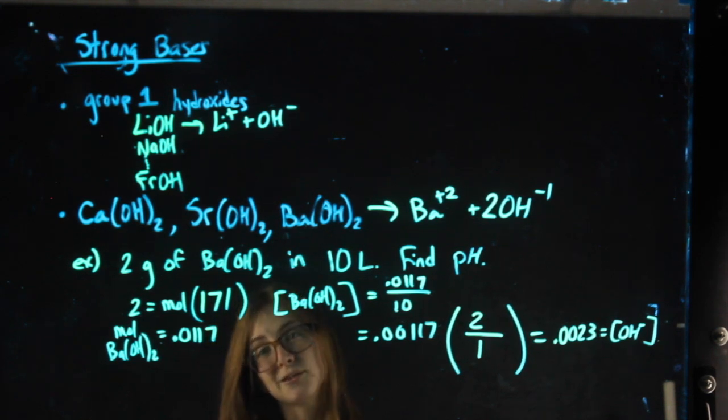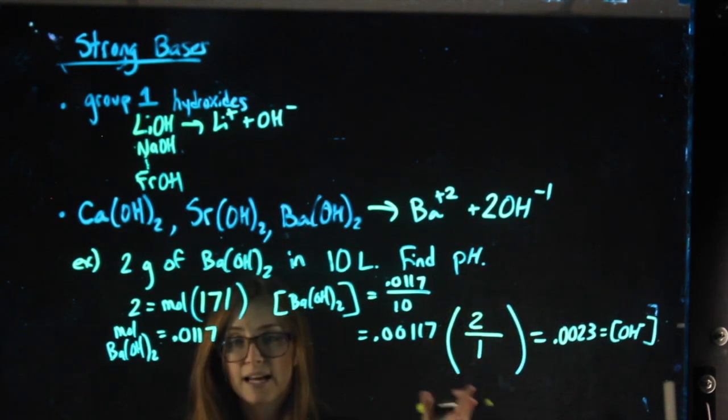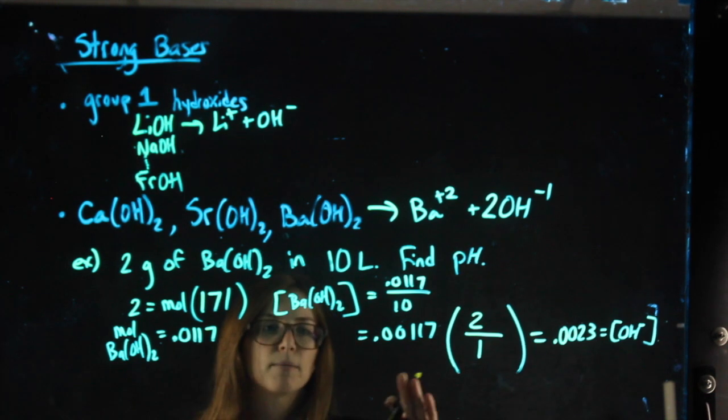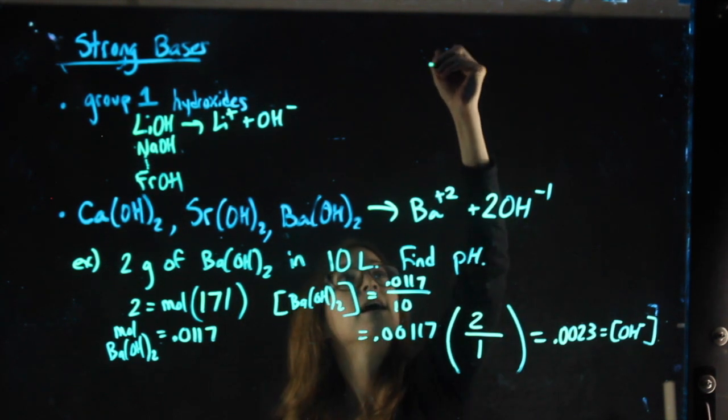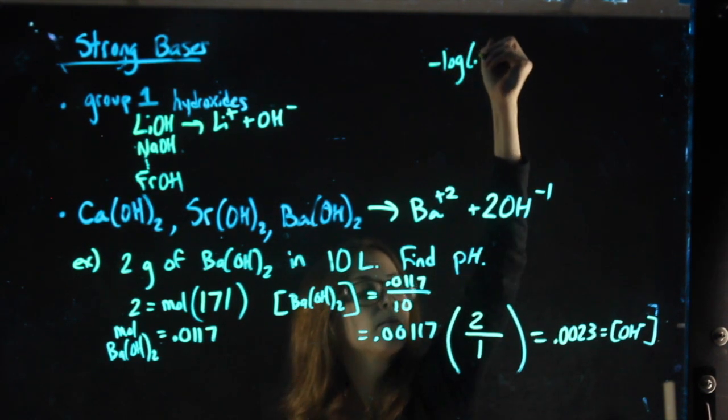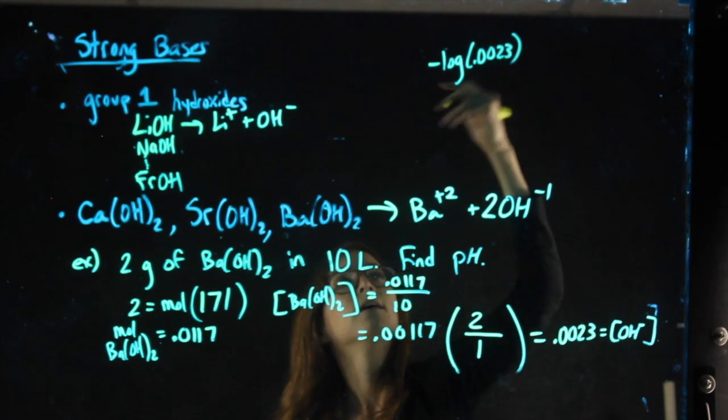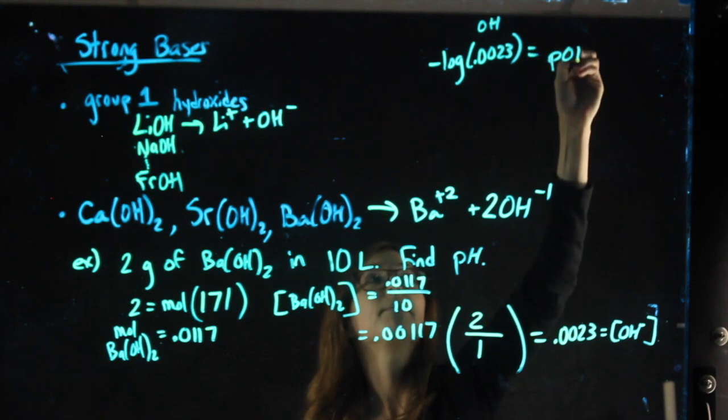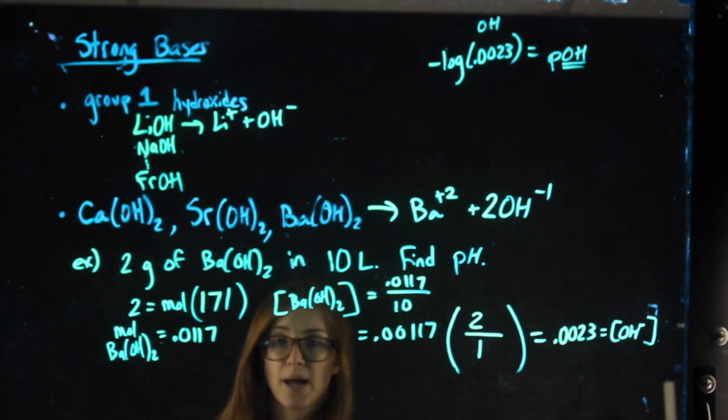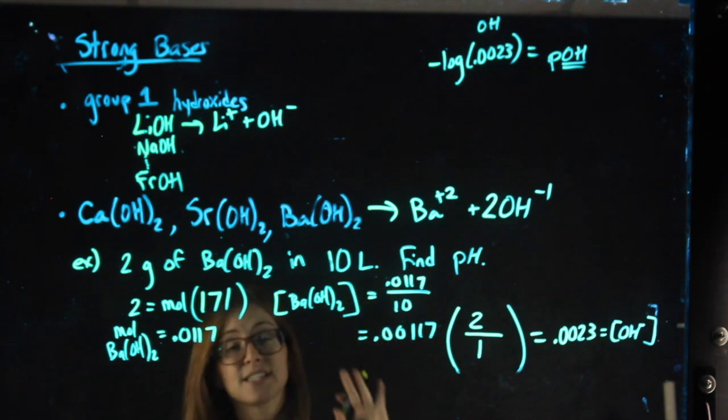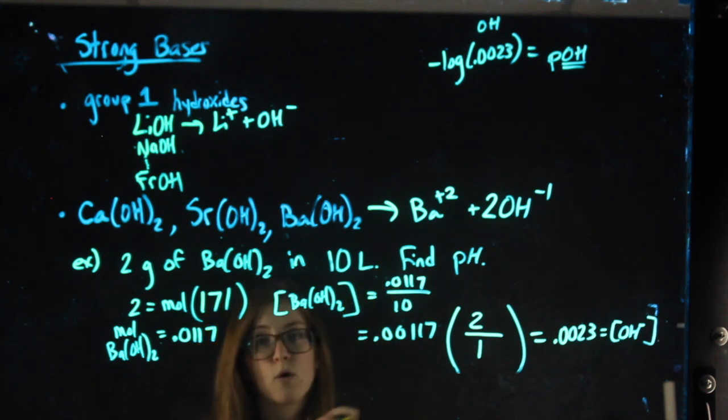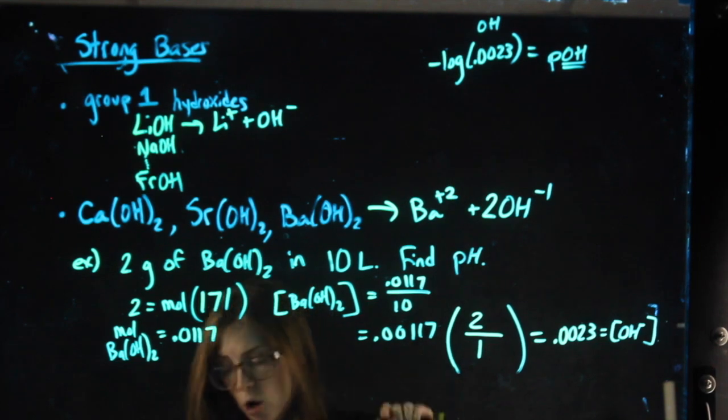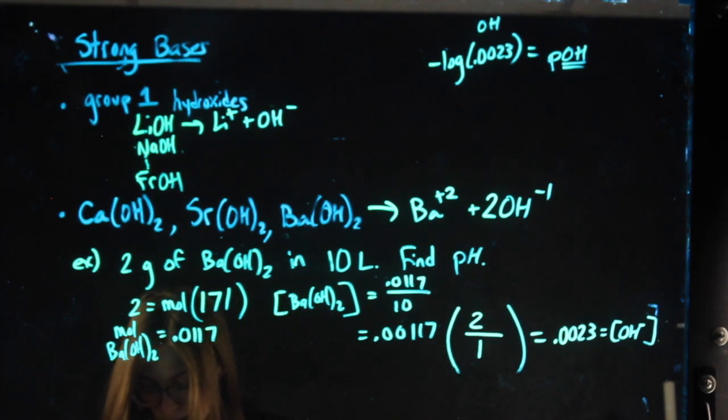From here, make sure you're using the formulas correctly. If I just negative log this number, I'm going to make sure I don't get cut off, so I'm going to go over here. If I just negative log 0.0023, really, I'm negative logging my OH. And so what this is going to find me is my pOH, not my pH. That's still the step I like to do next. Again, you can go any different way you want with the formulas. But since what I'm negative logging is my OH, what I'm going to get out is my pOH, 2.63.